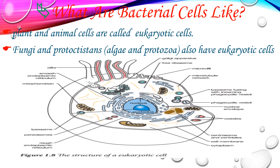What are bacterial cells like? Normally, plant and animal cells are called eukaryotic cells. Fungi and protists — which include algae and protozoa — also have eukaryotic cells. The structure of eukaryotic cells is similar across these groups.